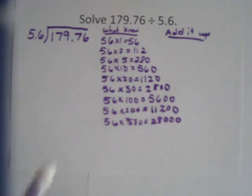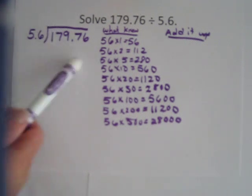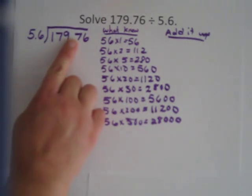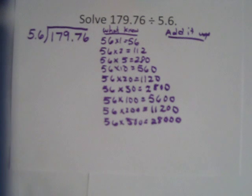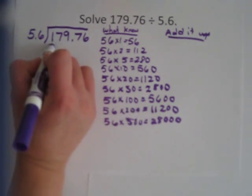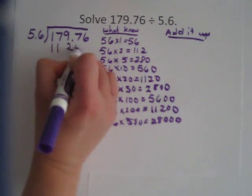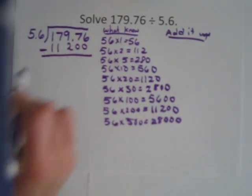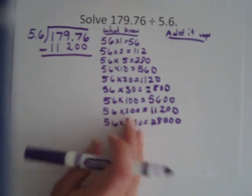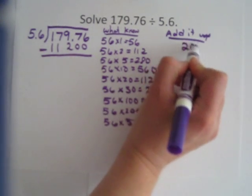Now I need to find what number is closest to this number without going over. 17,976. Remember I'm ignoring that decimal right now. So the closest to that is this, 11,200. So that's what I'm going to use first, and that is times 200, 56 times 200. So under added up I'm going to put 200.